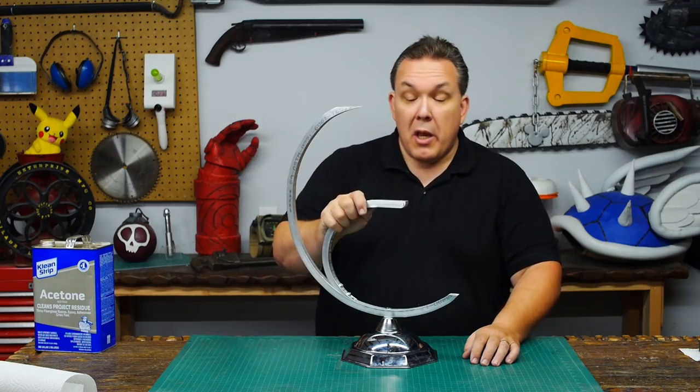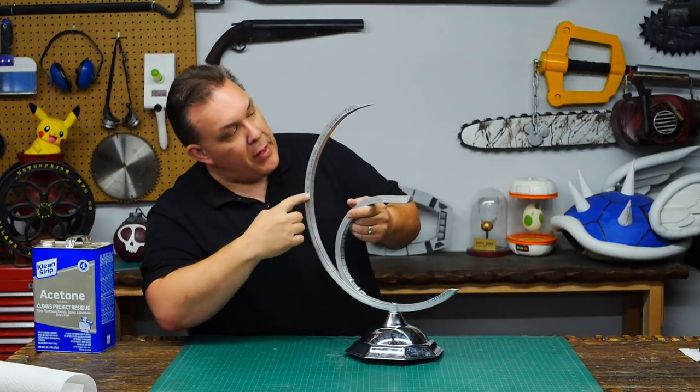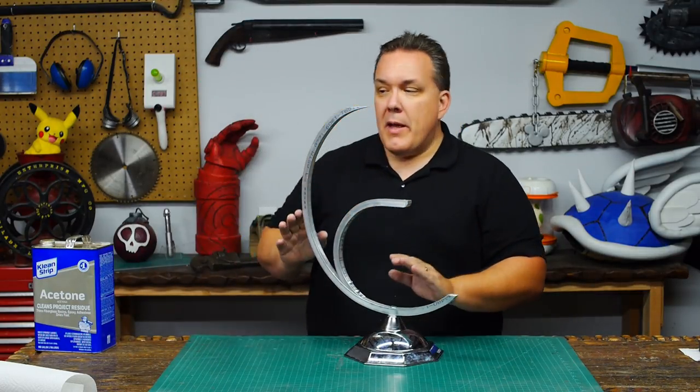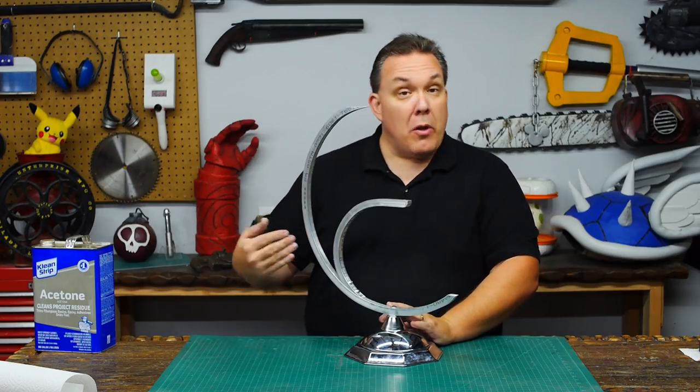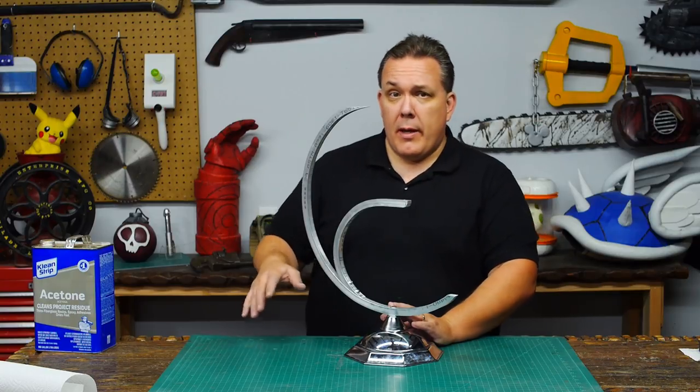Before I put all the playing boards on, I want to go ahead and use acetone to erase all the marks that are on the aluminum. And I want to keep the acetone clear of the plastic, because if I spill acetone on the plastic, it'll actually melt it and mar up the surface, which I don't want to have happen.